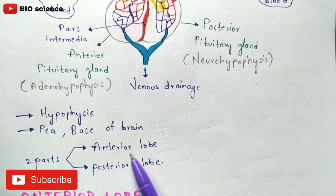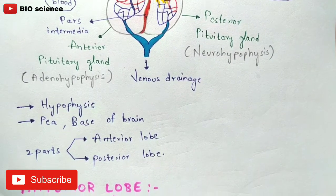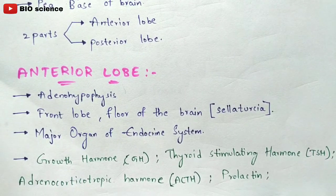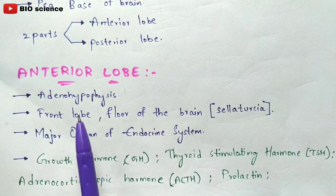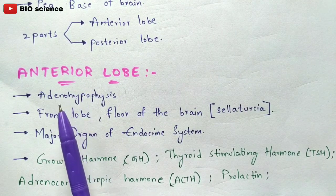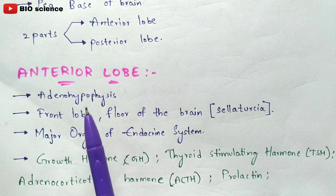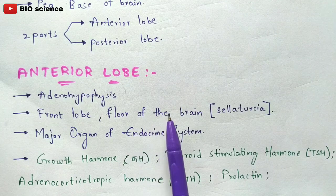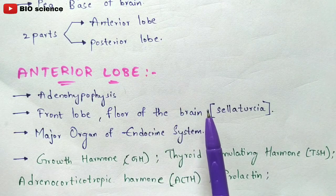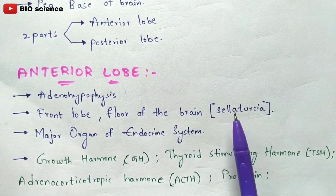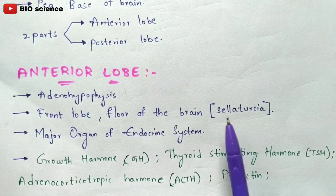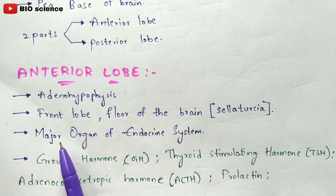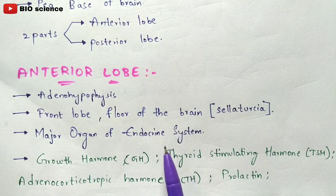Now let us discuss about the anterior lobe, which is the anterior pituitary gland, also called adenohypophysis. It is a front lobe present at the basement region of the brain, specifically at the region of the sella turcica. It is a major organ of the endocrine system.